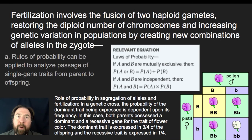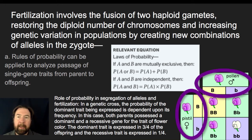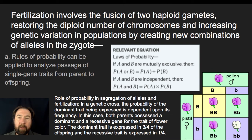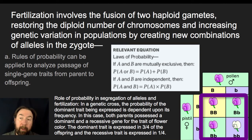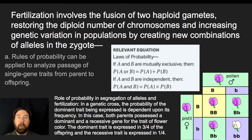Fertilization involves the fusion of two haploid gametes, restoring the diploid number of chromosomes and increasing genetic variation in the population by creating new combinations in the zygote. Two parents that are each big B and little B are able to produce offspring with genotypes quite different from themselves — not only big B little B like themselves, but also big B big B, or little B little B. That little B little B offspring is not only a different genetic makeup compared to the parents, it's also going to physically look different.